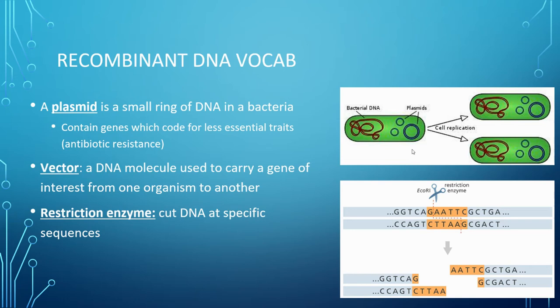Restriction enzymes are another key term. A restriction enzyme is a protein that cuts DNA at a specific sequence or specific site. We have a lot of different restriction enzymes and they cut at different sequences. As you can see in this picture, this is EcoR1 — it's not actual scissors, but it is a protein that cuts DNA at a specific site, giving us two strands of DNA. Very useful.